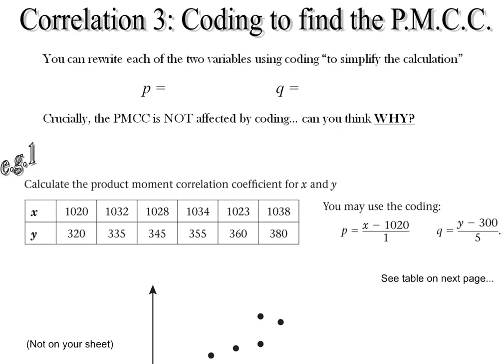And you can do the same thing with bivariate data. If we have data set X and Y like in this table here, you could define two other variables, your coded data.